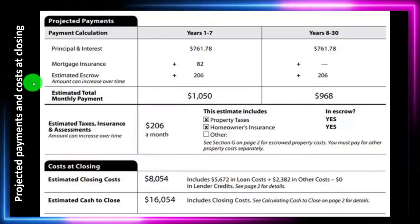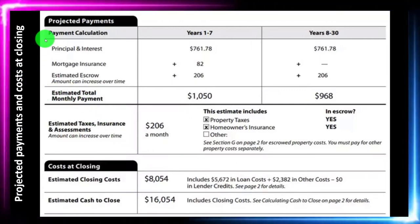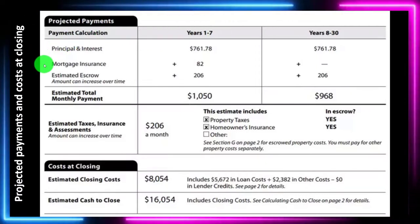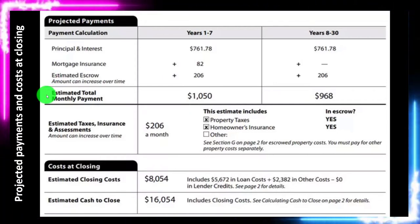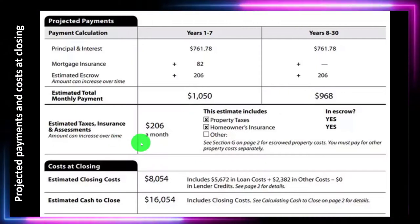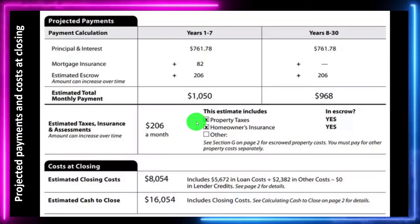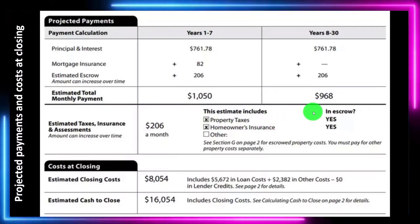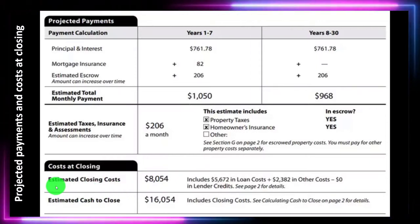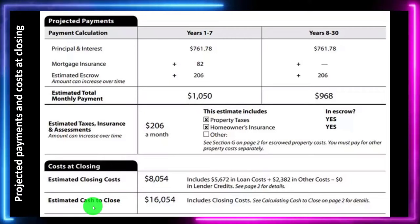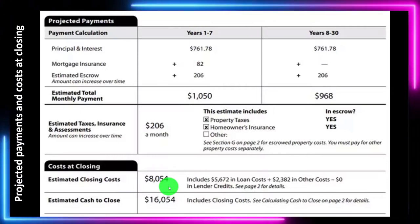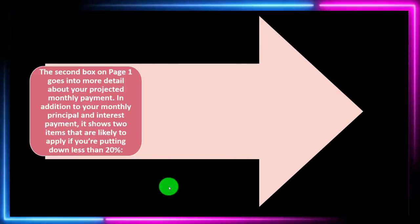Next we have projected payments and closing costs. The payment calculations show years 1 through 7 and years 8 through 30: principal and interest, mortgage insurance, estimated escrow, and estimated total monthly payment. There are also estimated taxes, insurance, and assessments. This estimate includes property taxes and homeowners insurance in escrow. Then we have estimated closing costs and estimated cash to close, which includes $5,672 in loan costs plus $2,382 in other costs.